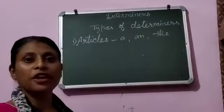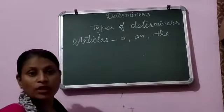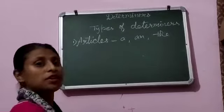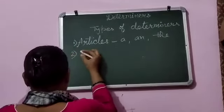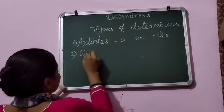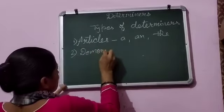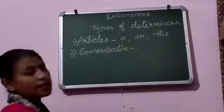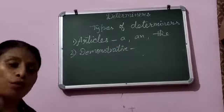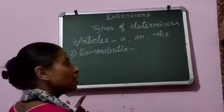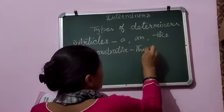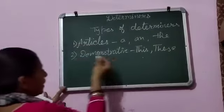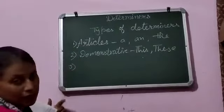A और an, similar noun के लिए use होते हैं, और the जो है वो specific चीजों के लिए use होते हैं। Second आते हैं demonstrative। Demonstrative कौन से होते हैं — जैसे हमने pronouns में किये थे — this, that, these, those। यह चार ही demonstrative determiners हैं।